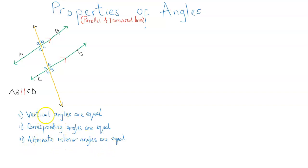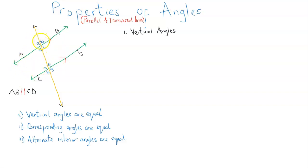So we need to identify each of these angle types. Vertical angles are angles that are about the same point but are opposite to each other. Looking at this diagram, there are four angles clustering around a point. A and C are opposite, so A is equal to C. Similarly, B is opposite D, so B is equal to D.